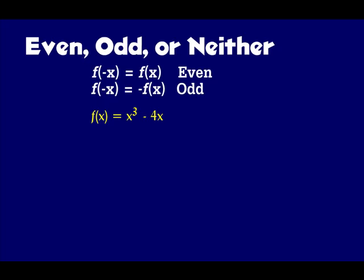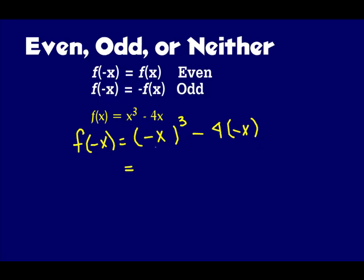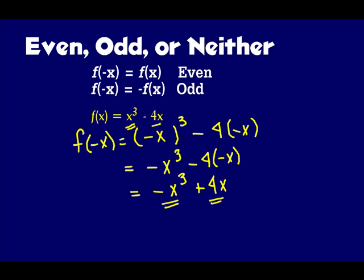Let's determine if this function is even, odd, or neither. We put negative x in for x — I make parentheses everywhere there's an x, then substitute negative x. Negative x to the third is negative x to the third, minus 4 times negative x: a negative times a negative is a positive, so I have negative x to the third plus 4x. Negative x to the third is opposite x to the third, and positive 4x is opposite negative 4x, so this is an odd function.